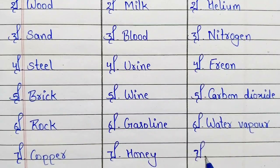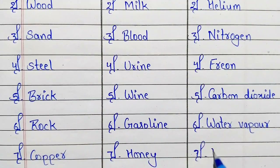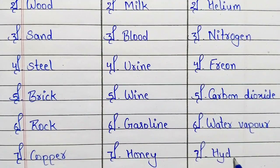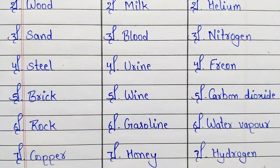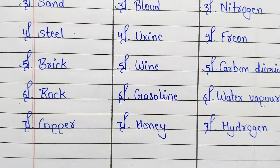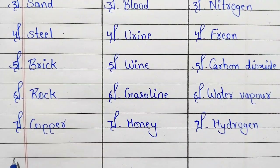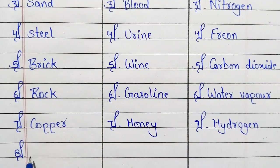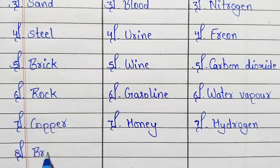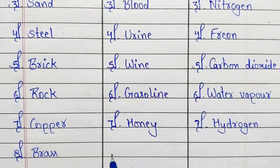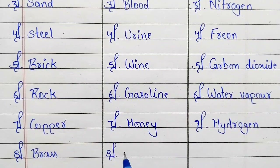Seventh number: liquid — honey. Seventh number: gas — hydrogen. Eighth number: solid — brass.